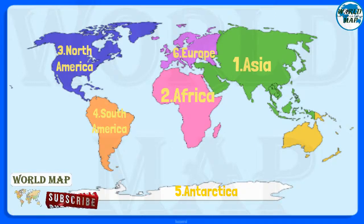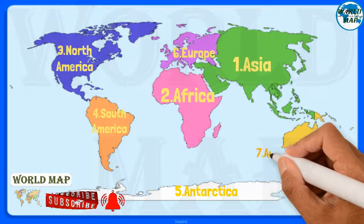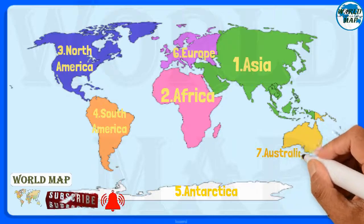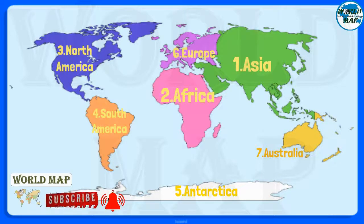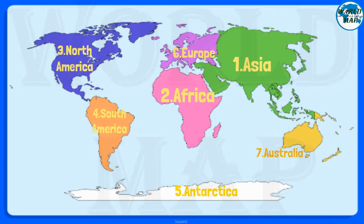Number 7: Australia. Australia is the smallest continent in the world and is the flattest and second driest after Antarctica. It is also the second least populated after Antarctica. It comprises 14 countries.